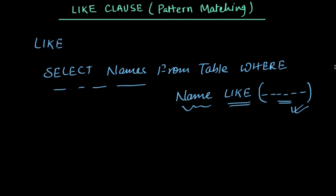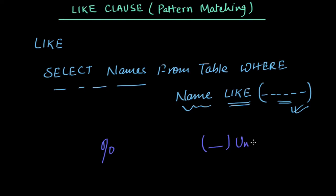To define the pattern, we have two wildcard operators. One is the percentage sign (%) and another one is the underscore (_).